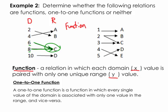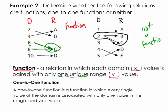Looking at the second mapping diagram, we can see a problem right away: the number 2 points to two different values, meaning there is not one unique value in the range for that domain element. So right away, this is not a function.